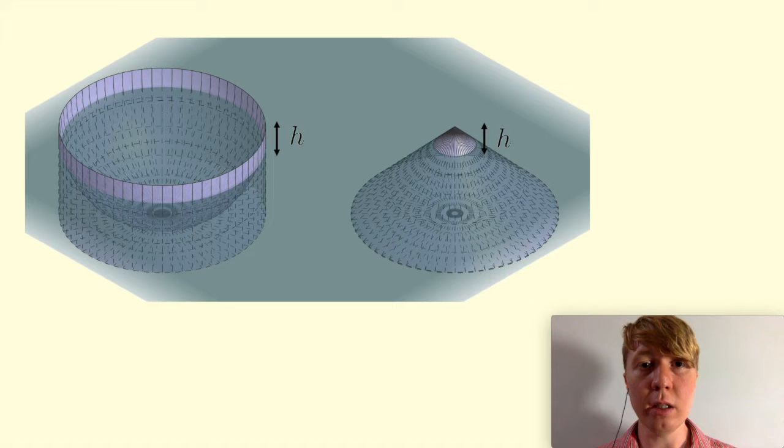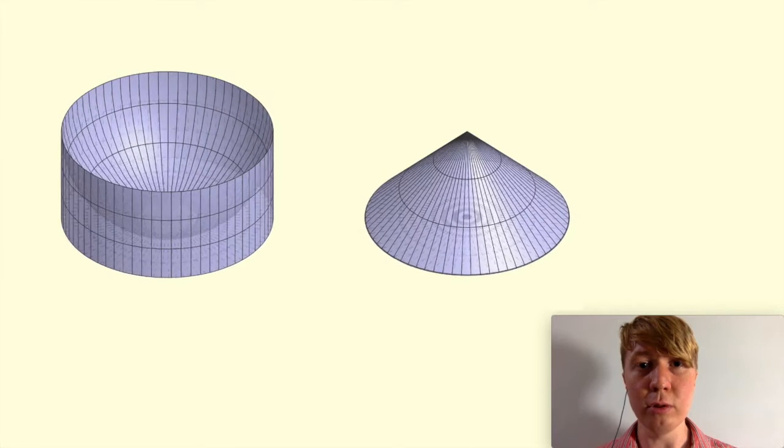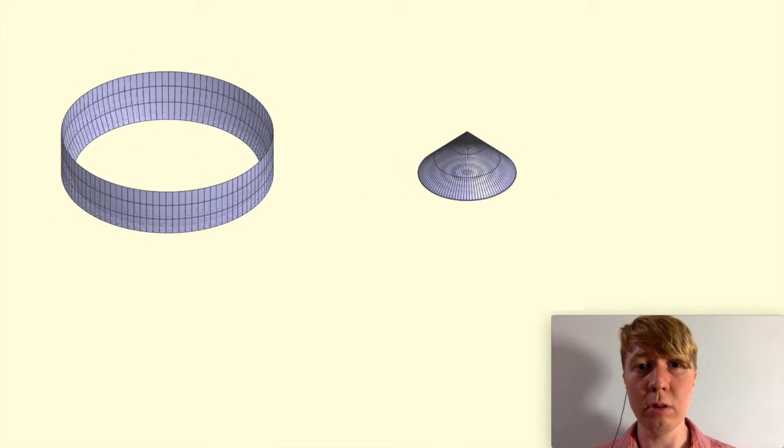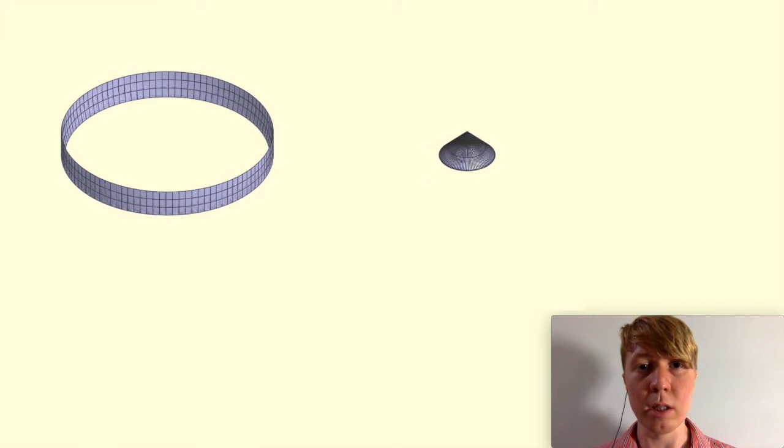Now, things get really interesting here as H gets smaller and smaller. So on the left-hand side, you can see the bowl as this shrinks down. As H gets smaller, you're left with a circle, whereas the cone shrinks and shrinks, and all you're left with is a point.